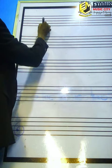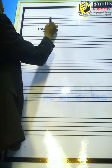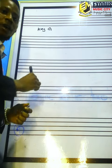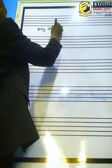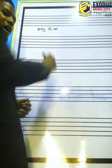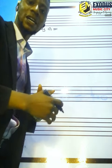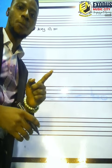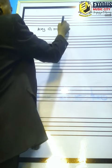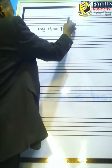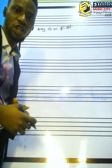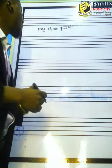Now for example, let's construct the scale of G. The key of G has only one sharp, which is F sharp. So key G equals F sharp.